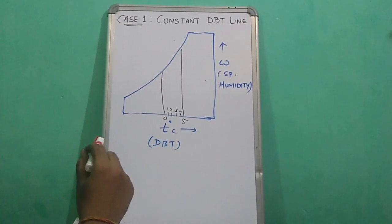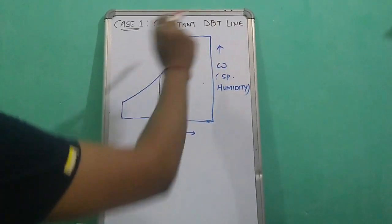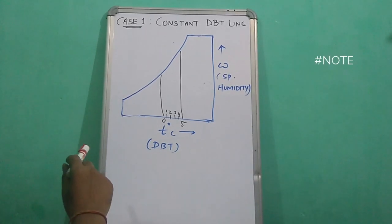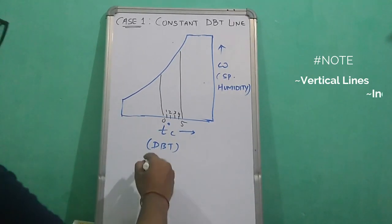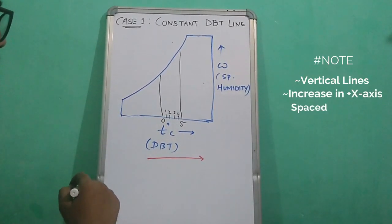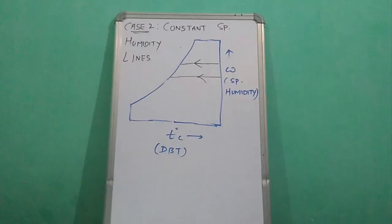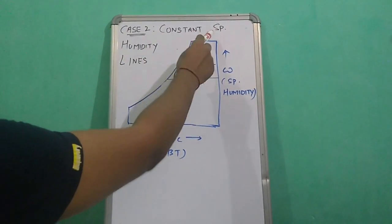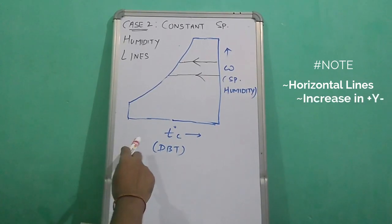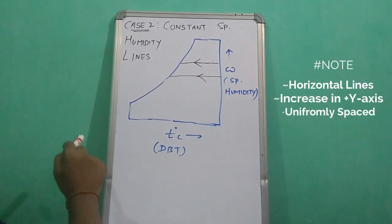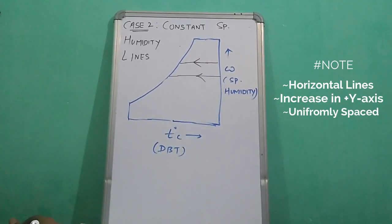Let's represent the different constant parameters on the psychrometric chart. Case 1: constant dry bulb temperature lines are vertical lines on the psychrometric chart, increasing in the positive x-direction. Case 2: constant specific humidity lines are horizontal lines moving towards the saturation curve, increasing in the positive y-direction, and are uniformly spaced.